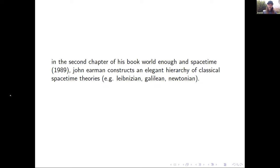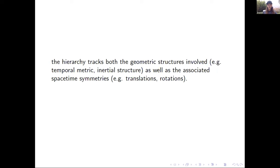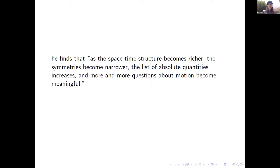In the second chapter of his book World Enough in Spacetime, John Earman constructs an elegant hierarchy of classical spacetime theories. The hierarchy tracks both the geometric structures involved and the associated spacetime symmetries. He finds that as the spacetime structure becomes richer, the symmetries become narrower, the list of absolute quantities increases, and more and more questions about motion become meaningful.